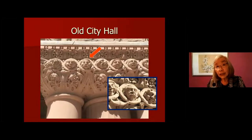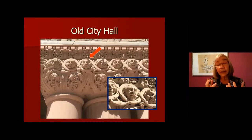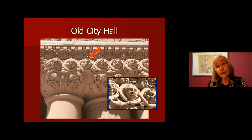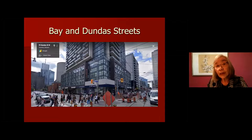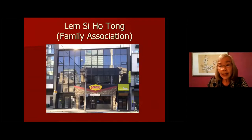The Chinese started moving into the Ward in the early 1900s, and by the early 1920s we had quite an established area that came to be called Chinatown. By the early 1920s, it was the third largest Chinatown after Victoria and Vancouver. Now walking north on Bay Street, looking south from Bay and Dundas, we're going to walk along Dundas Street.